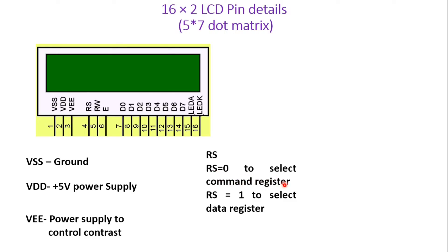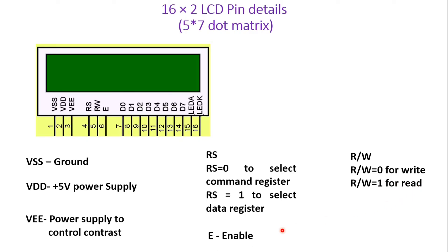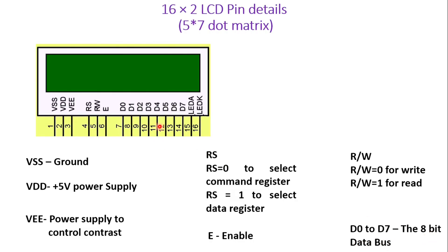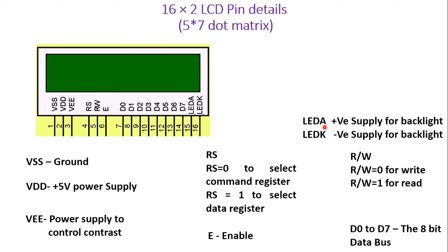If RS equals 0, it selects the command register; RS equals 1 selects the data register. For RW: if 0, the LCD is in write mode; if 1, it is in read mode. The Enable pin — by sending a 0-to-1 transition, whatever content is on D0 to D7, whether data or command, gets latched into the internal register. D0 to D7 are the data bus pins for sending 8-bit commands or data. Finally, connect positive supply to LED Anode and negative to LED Cathode to power the backlight.